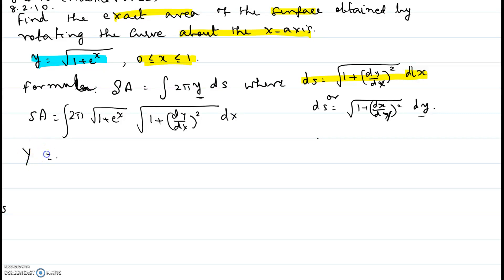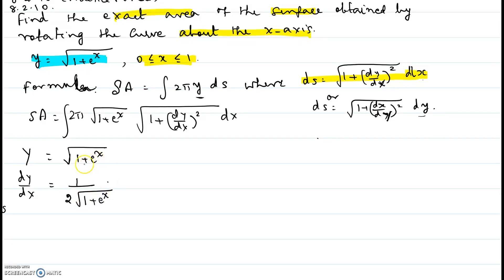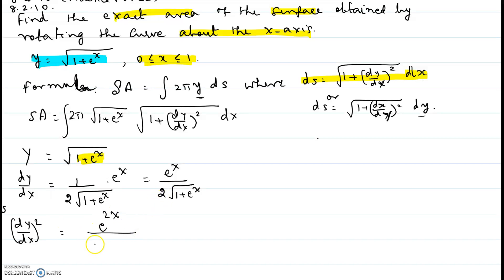Here y equals the square root of 1 plus e to the x, so we find dy/dx using the chain rule. The outer derivative gives 1 over 2 times the square root of 1 plus e to the x, and the inner derivative of 1 plus e to the x is e to the x. So dy/dx equals e to the x over 2 times the square root of 1 plus e to the x. Squaring that gives e to the 2x divided by 4 times (1 plus e to the x).